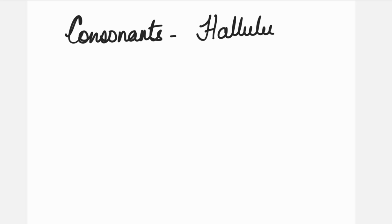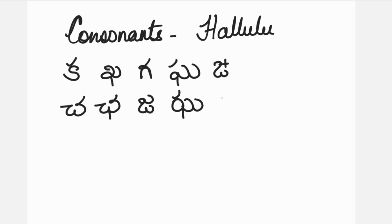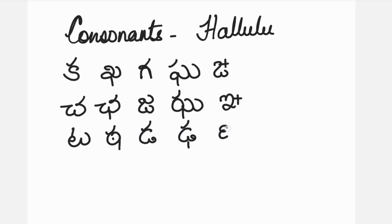The consonants are: Ka, kha, ga, gha, nga. Cha, chha, jha, jha, nga. Nowadays, nga is called nga, and this nga is called ini. Ta, tha, da, dha, nga.